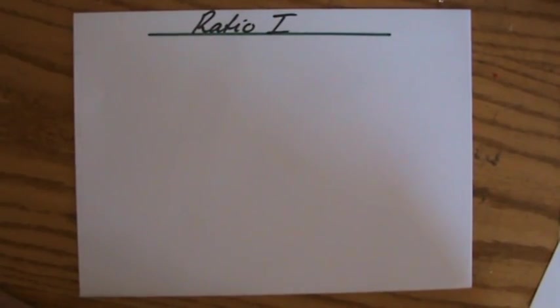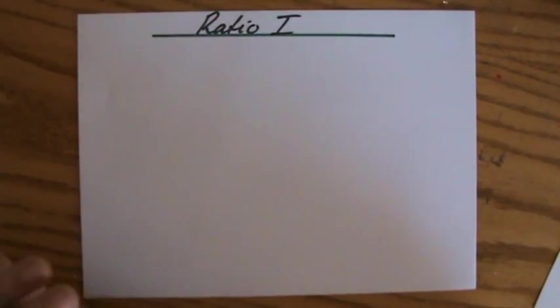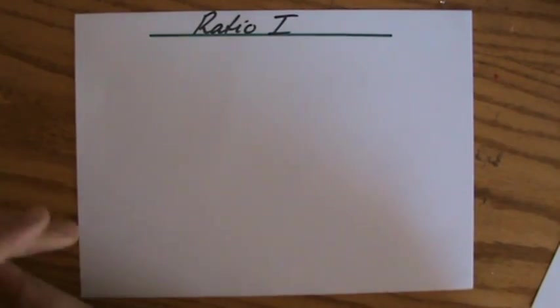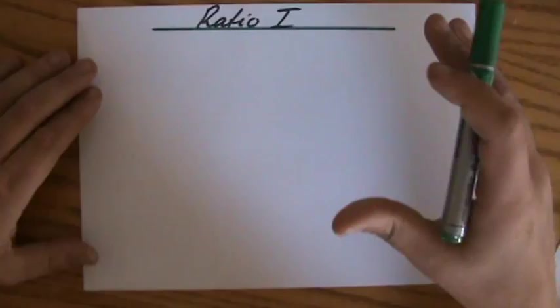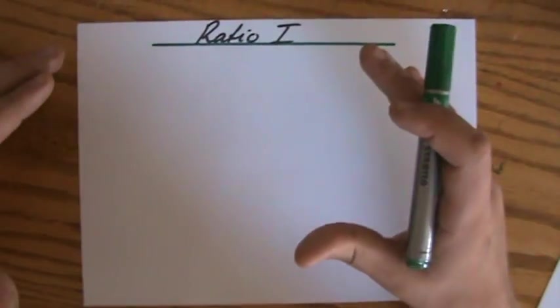We're going to talk about ratio now, and ratio is very closely linked to direct proportion because ratio tells us something about the relationship between certain quantities.